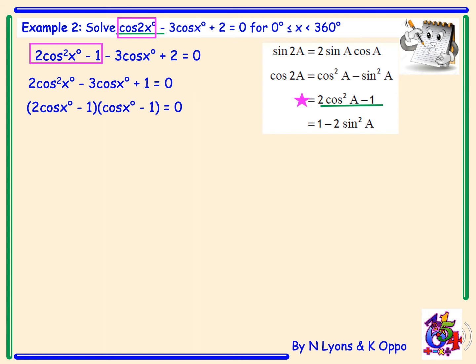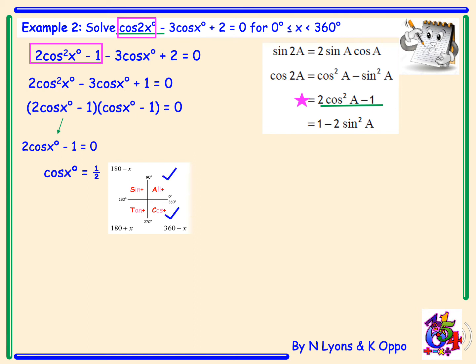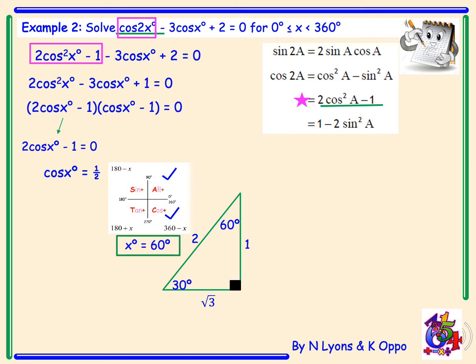We split this and solve each equation separately. First, 2cosx - 1 = 0 rearranges to cosx = 1/2. Using the CAST diagram, cosine is positive in the first and fourth quadrants. The exact value gives x = 60 degrees for the first quadrant, and 360 - 60 = 300 degrees for the fourth quadrant.